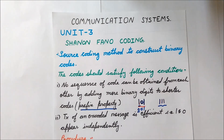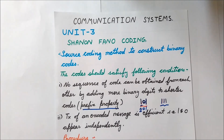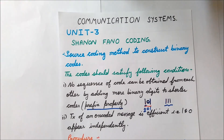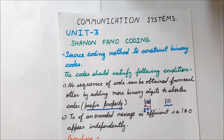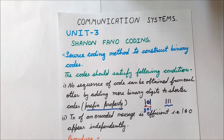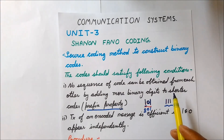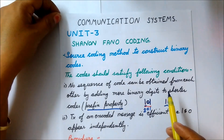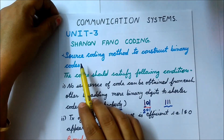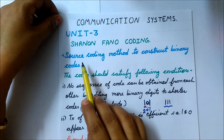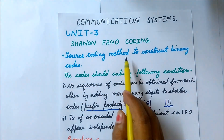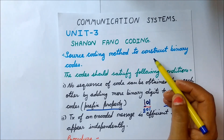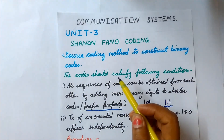Hello students, welcome to Smart Engineering Tutorials. Today we are going to see another topic of Unit 3, which is Shannon Fano coding. In this syllabus there are two coding techniques: Shannon Fano coding and Huffman coding — we will deal with the other in another video. These two coding techniques are source coding methods used to convert a message into a binary code.